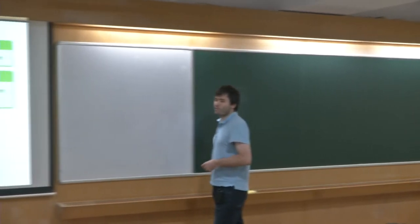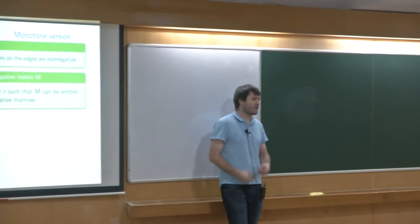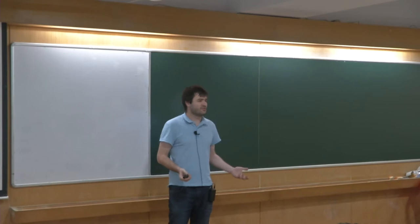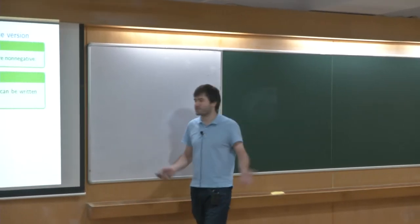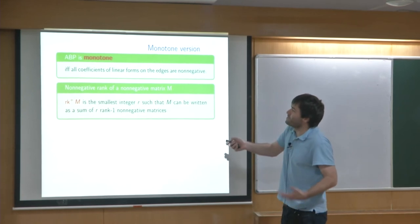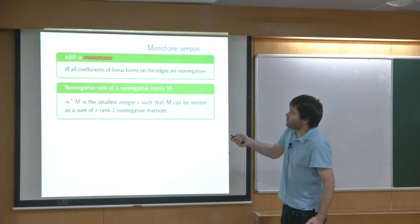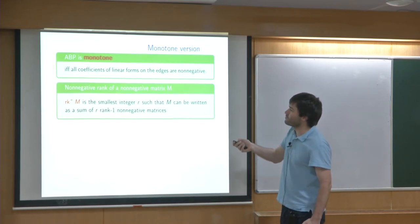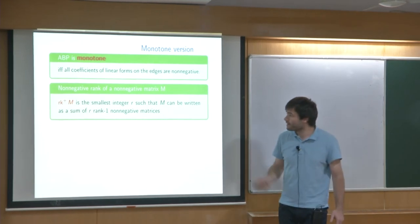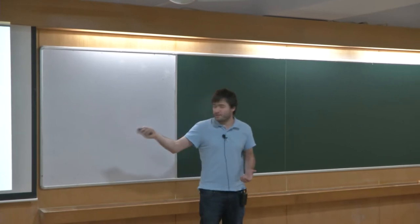I'm interested in the monotone case. What we call monotone in this model means we don't allow subtraction: we start with only non-negative coefficients and allow addition and multiplication but not subtraction. We want to understand what monotone ABPs look like. The easy definition: a monotone ABP is one where all coefficients appearing in the linear forms are non-negative.